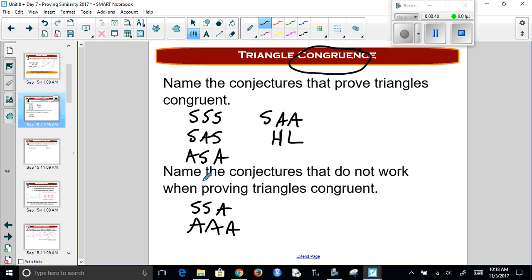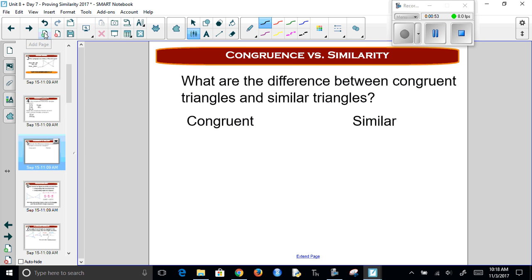Now, similarity is something different. What's the difference between congruent and similar? Congruent is sides and angles congruent. Similar, we have angles that are congruent, but the sides are going to be proportional. So this is a little bit different.